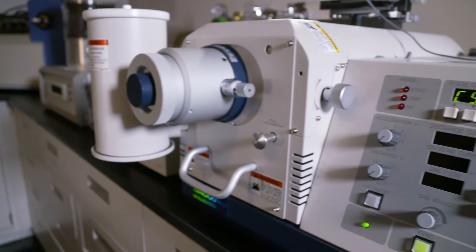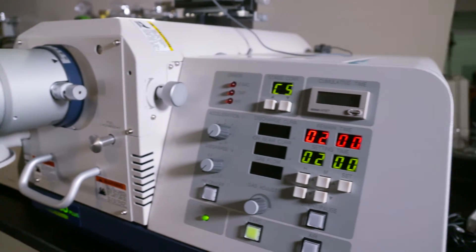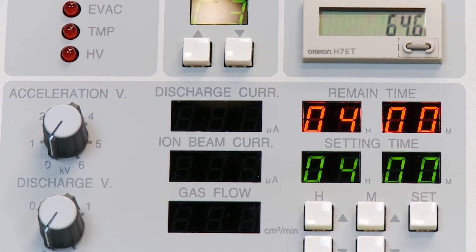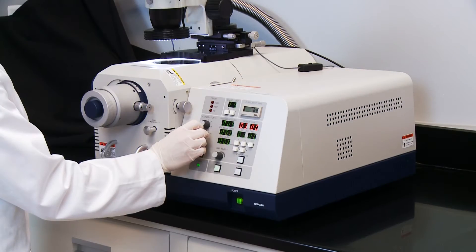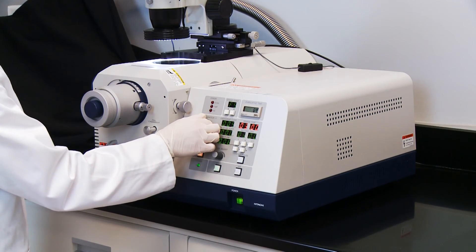The Ion 4000 Plus includes a user-friendly electronic control panel which contains all the functions needed for a successful milling session. Controls are provided to adjust the Ion Beam accelerating voltage and beam current.